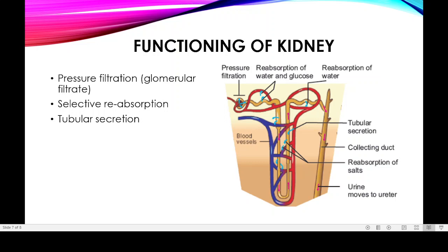Due to the high blood pressure in the glomerular capillaries, water, salt, glucose, and urea are forced from the blood into the Bowman's capsule. This filtered fluid is called the glomerular filtrate, which contains salt, water, glucose, and urea.